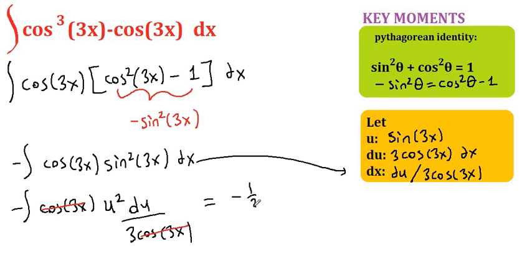negative one third. If you pull this 3 in front, you get the integral of u squared du. Now we can take the anti-derivative of this. The anti-derivative of u squared is u to the third over 3. And if you clean this up a little bit more, it's going to be negative 1 over 9.